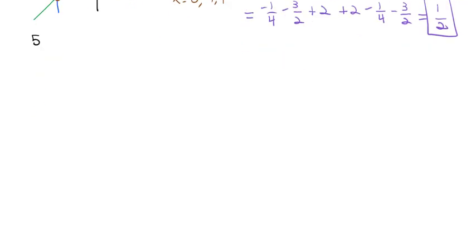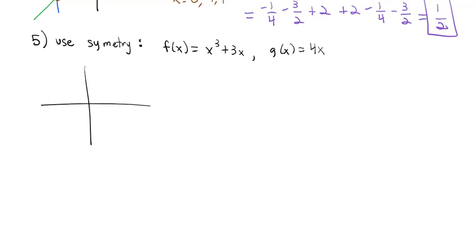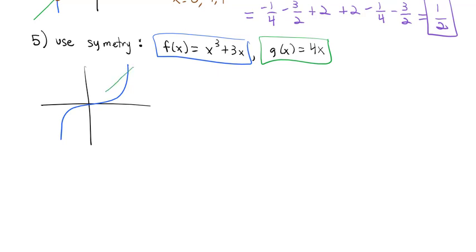Sometimes we can use symmetry to our advantage. We're doing the same functions: f of x equals x cubed plus 3x and g of x equals 4x. If you graph it on Desmos or your calculator, you'll see the left and right sides are exactly the same shape and exactly the same size. Because they're exactly the same shape, we only need to find the area of one piece and then double it to account for the other piece.